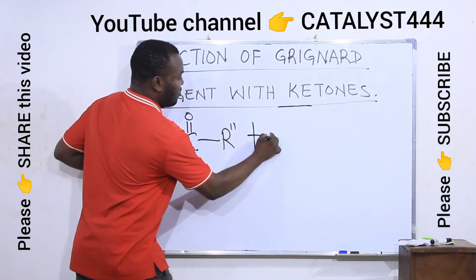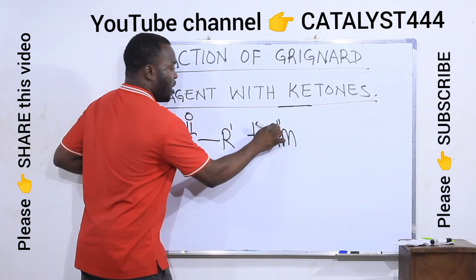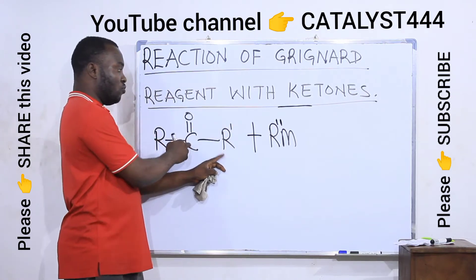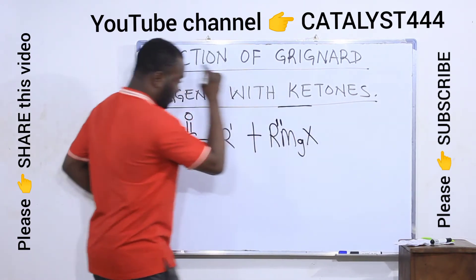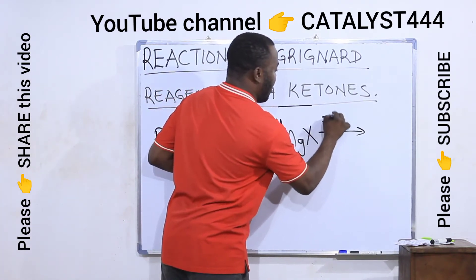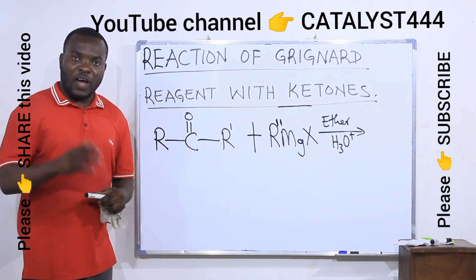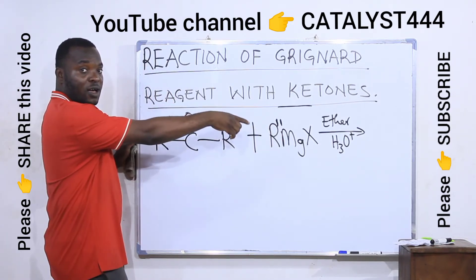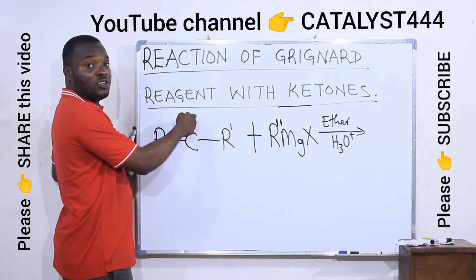Here is the ketone, and when it reacts with a Grignard reagent — represented as R''MgX — I use R'' to differentiate the alkyl groups: R and R' are on the ketone, while R'' is the alkyl group on the Grignard, and X is the halogen. When a Grignard reagent reacts with a ketone in the presence of ether in an acidic medium, disconnect the alkyl group present in the Grignard reagent and attach it to the carbonyl functional group of the ketone. Then protonate the oxygen — that is, convert it to OH.